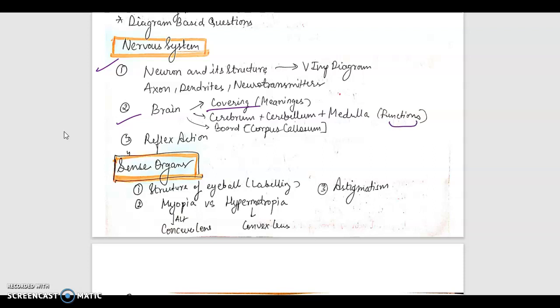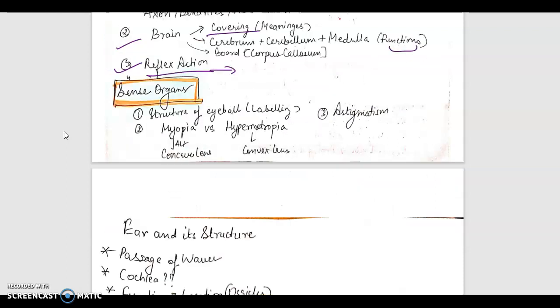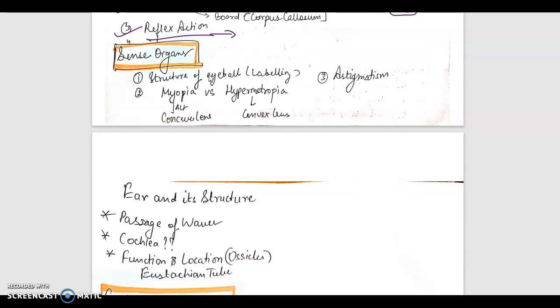Moving on to brain, the covering is the meninges. Cortex. And it's divided into these three parts: cerebrum, cerebellum, medulla. Its functions. Then as you know, brain is filled with this liquid. And then this term reflex action. Sense organs. The structure of eyeball - you'll have to label it. And all these important terms like astigmatism, then myopia versus hypermetropia. How can you correct it? For myopia you have to use this concave lens to correct your vision. This is short-sightedness. Then hypermetropia, convex lens.